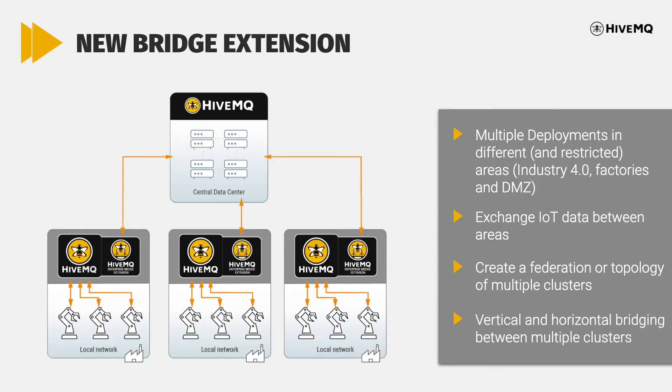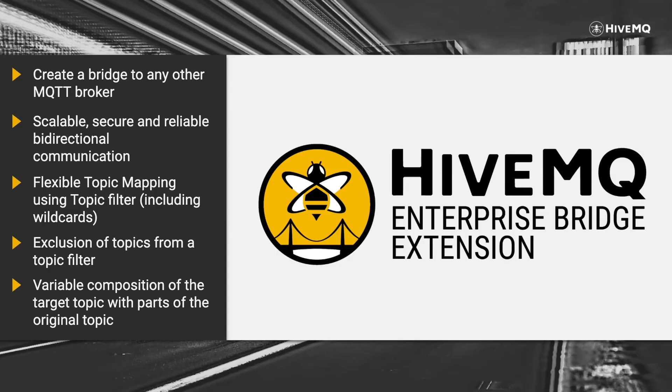Especially in the industry sector, HiveMQ customers are using multiple deployments in different and restricted environments like factories. Sharing important IoT data between these environments or streaming important data to the central data center is a main concern. So we are thrilled to introduce our Enterprise Bridge extension — a scalable and secure solution to bridge between a HiveMQ cluster and any other MQTT broker. It includes bi-directional communication using flexible topic mappings, similar to the concept from our HiveMQ Enterprise extension for Kafka.